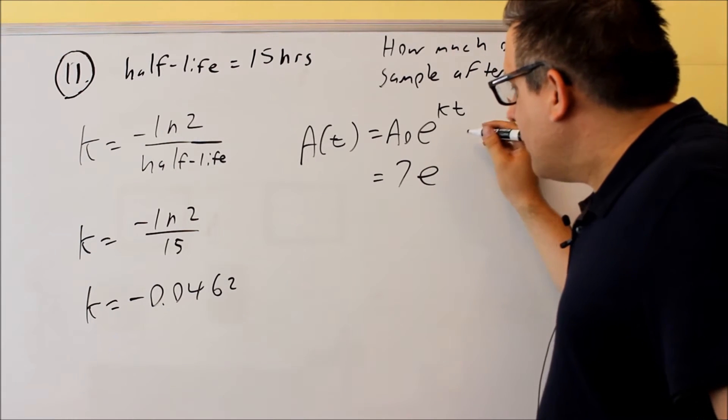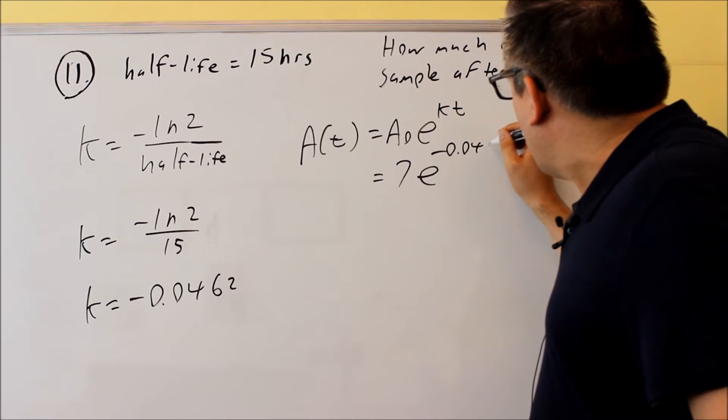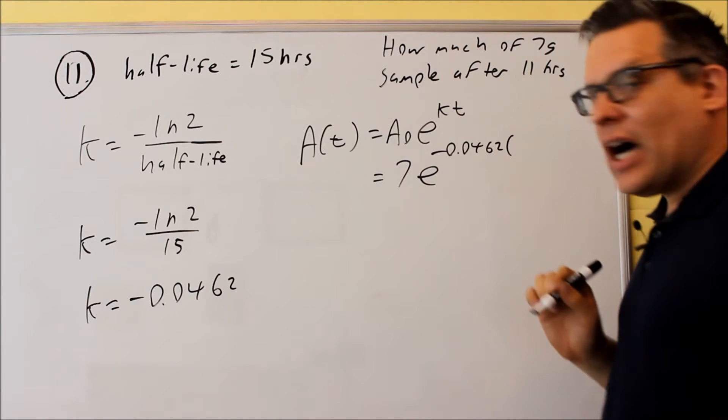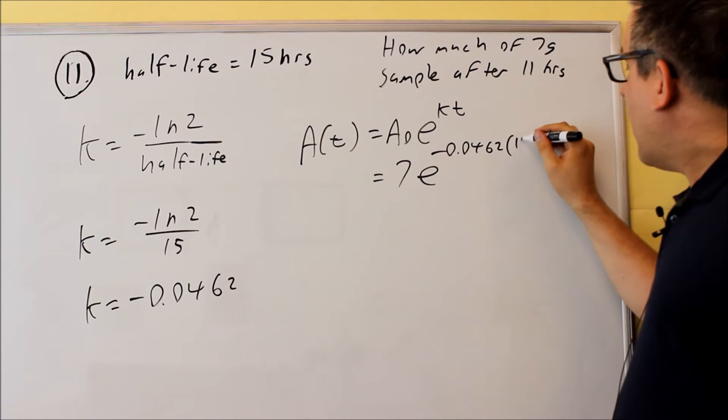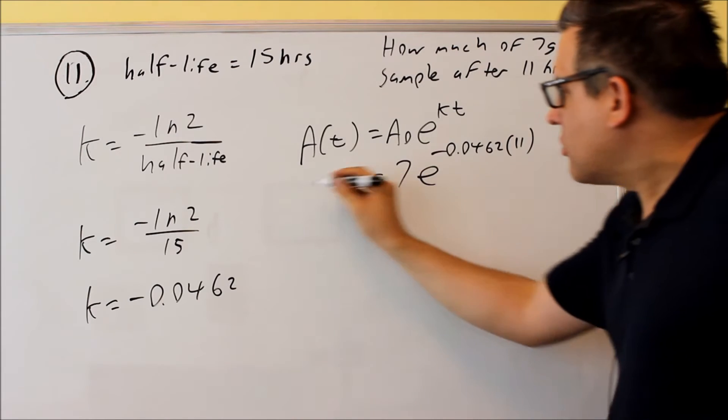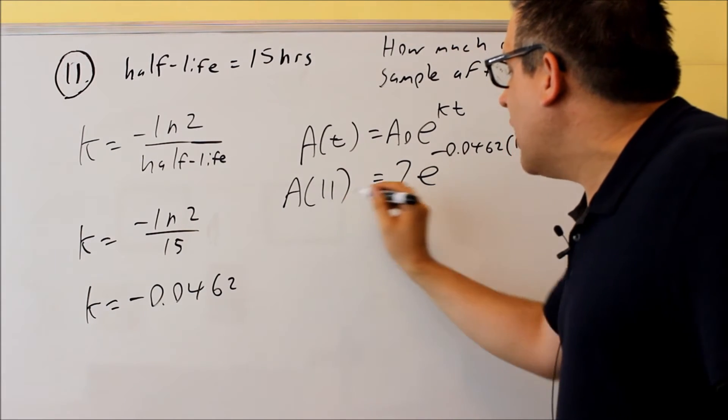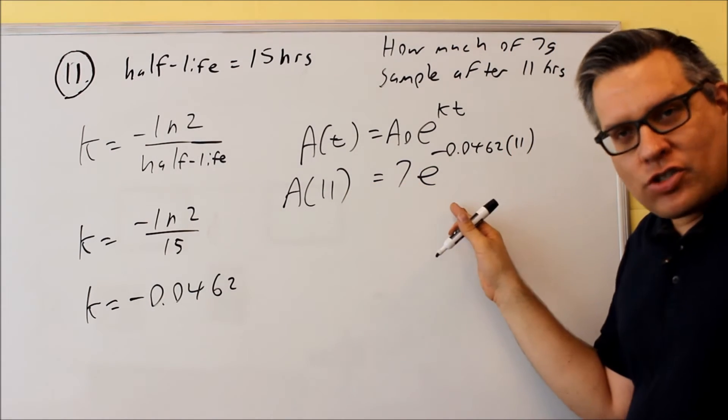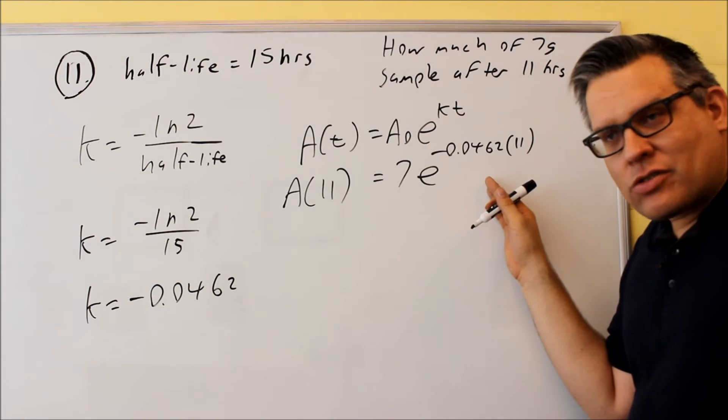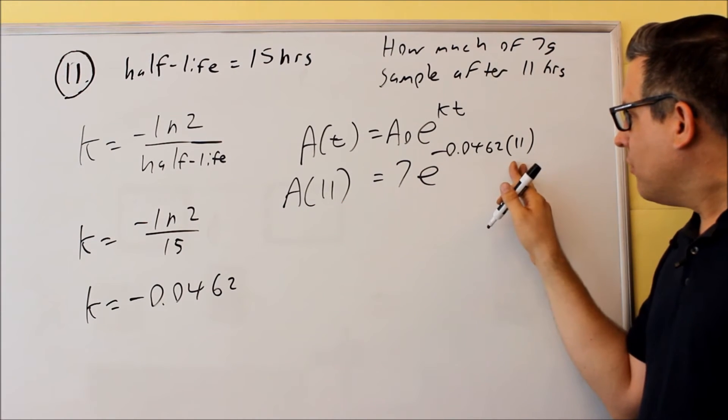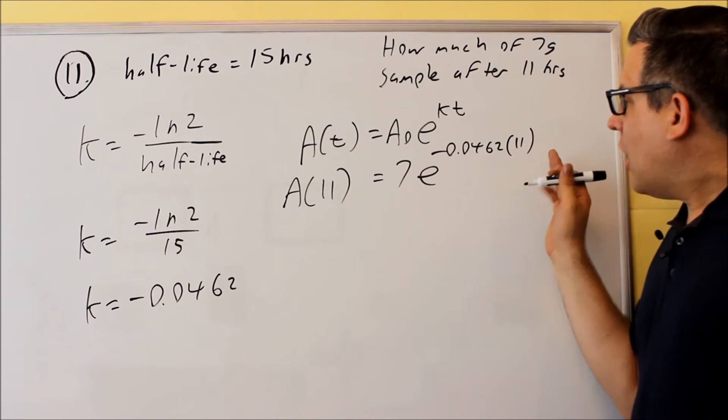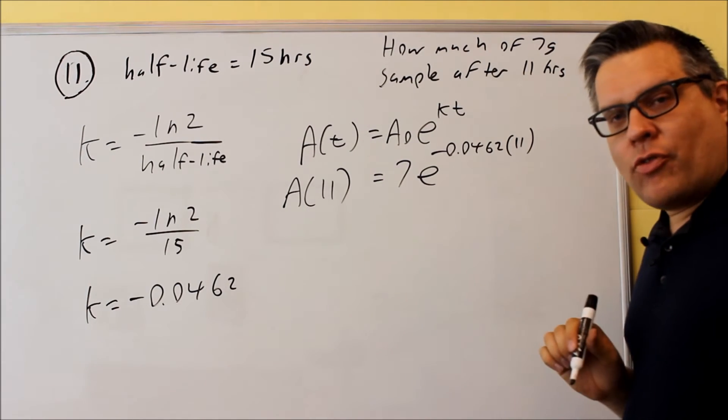The k-value is negative 0.0462. The time is going to be 11 hours, so you put that inside there. Anywhere you see a t, we're putting in 11. Writing it as a function, A(11) equals 7e to the negative 0.0462 times 11. That right there is the setup for it.